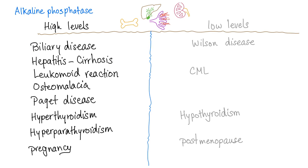Alkaline phosphatase can be high in some conditions and low in others. If you remember these organs — bone, hepatobiliary, placenta, and kidney — you can memorize all of these. High levels of alkaline phosphatase in the blood are seen in biliary disease, hepatitis, or cirrhosis; leukemoid reaction; osteomalacia; Paget's disease of bone; hyperthyroidism; and hyperparathyroidism.